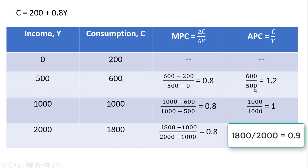At an APC of 1.2, they are eating into their savings to spend more than their income. When income is 1,000, consumption exactly equals 1,000. The change in consumption from 600 to 1,000 is 400 units, and income rises from 500 to 1,000 — a 500-unit increase — giving MPC = 0.8 and APC = 1. When income is 2,000, consumption is 1,800, yielding MPC = 0.8 and APC = 0.9.